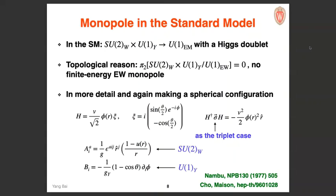Since we haven't measured proton decay — a leading prediction of grand unified theories — suppose we don't know whether there is new physics beyond the standard model. Then the question is: what would be the monopole in the standard model? The first thing to check is the homotopy group. For standard model symmetry breaking SU(2)×U(1)→U(1)_EM, the relevant homotopy group is trivial — so there is no mathematically consistent monopole state in principle.